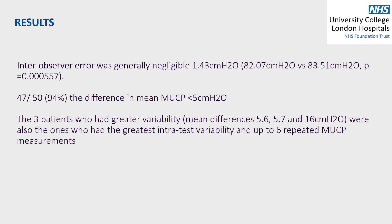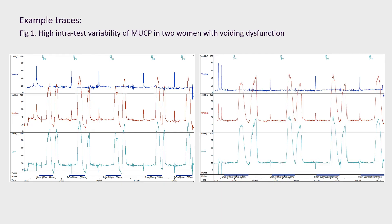The three patients who had greater variability — mean differences of 5.6, 5.7, and 16 cm of water — were also the ones who had greater intra-test variability and up to six repeated MUCP measurements. Figure 1 exemplifies high intra-test variability of MUCP in women with voiding dysfunction.